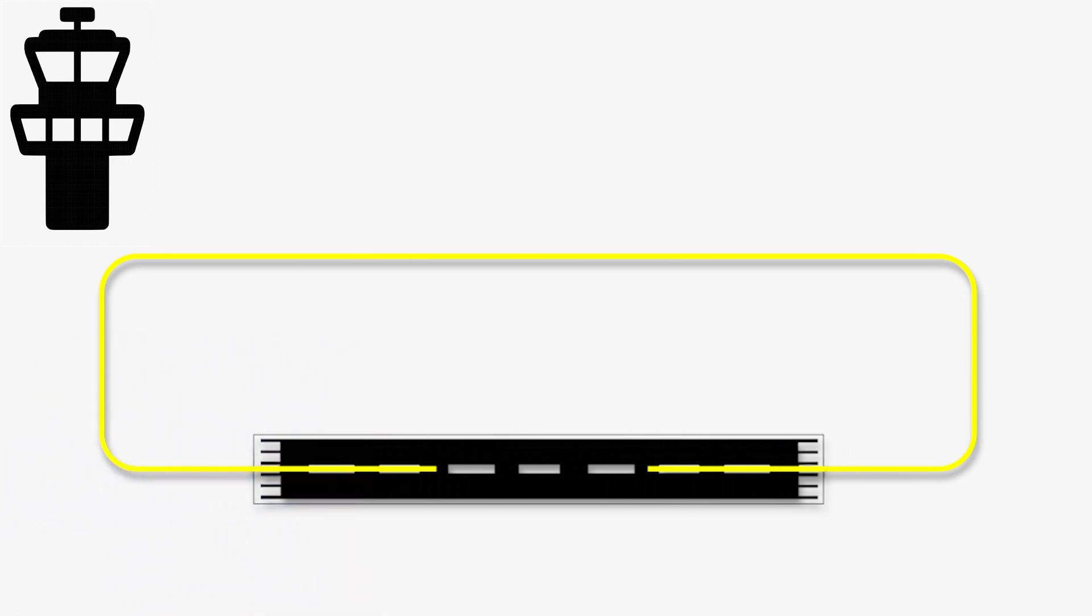It is vital that the pilot be situationally aware of their position to the runway in use so they can properly join the traffic pattern on the leg the tower directed them to.